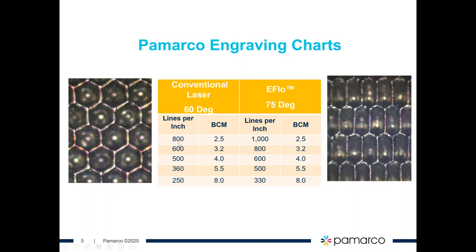If you have an 800-line, 60-degree conventional thermal flow engraving, that's going to be roughly 2.5 BCM. You specify the BCM, and our manufacturing specifications are what you order minus zero percent, plus five percent — so you're never going to get a roll below what you've asked for. The same roll to produce that 2.5 BCM on an e-flow engraving is actually a 1,000 lines per inch. For example, a 500 conventional is 4 BCM, while a 600 e-flow is also 4 BCM. You'll see the difference between the engravings — both provide excellent performance based on your application.